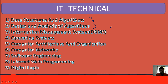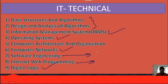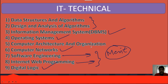Then do information management systems, which is your DBMS. After that move to computer networks, which is very important for IT. Then do OS, and COA which is computer architecture and organization, then digital logic. The important topic for IT is software engineering and internet and web programming — whatever topics are mentioned there, do all of them. This topic will place you in the merit list, so pay special attention to it.